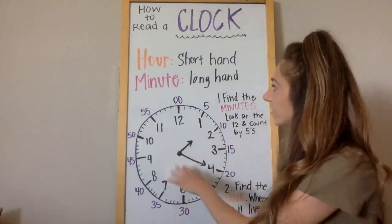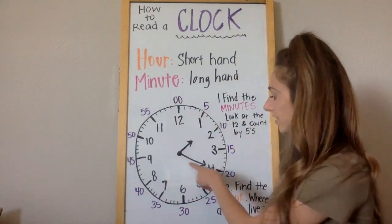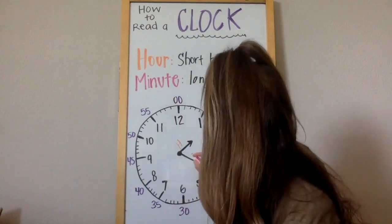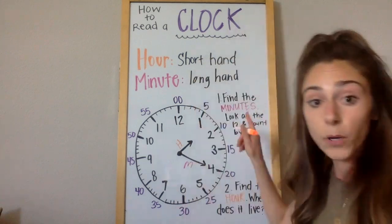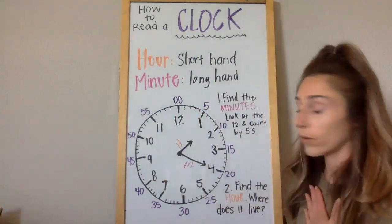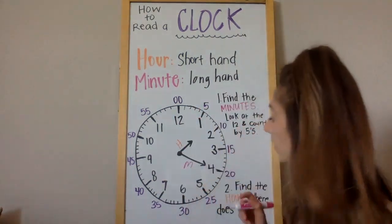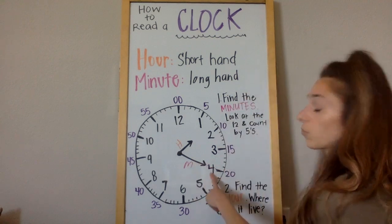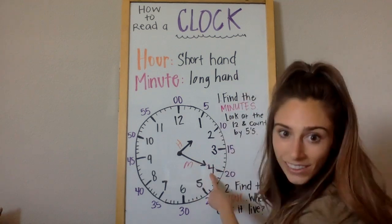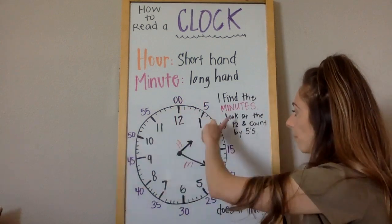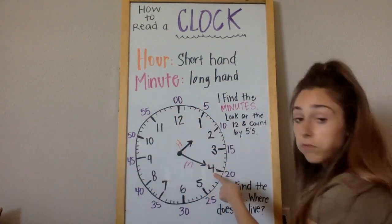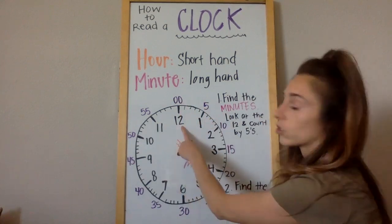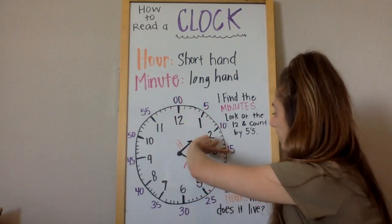So we talked about how our hour hand is our short hand and our minute hand is our long hand. I'm going to put the color here just so we remember — an H for hour and an M for minute. Number one: I like to find the minutes first. I look at my minute hand, my long hand, and I see where it is. My minute hand is right on the four. In minute language, we count by five each time we get to one of our numbers. So if it's on the four, we count by five four times. Starting at the 12: zero, five, ten, fifteen, twenty.